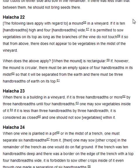Halakha 22. The following laws apply with regard to a mound in a vineyard. If it is ten handbreadths high and four handbreadths wide, it is permitted to sow vegetables on its top as long as the branches of the vine do not touch it, so that from above there does not appear to be vegetables in the midst of the vineyard. When does the above apply? When the mound is rectangular. If however the mound is circular, there must be an empty space of four handbreadths in its midst, so that it will be separated from the earth, and there must be three handbreadths of earth on its top.